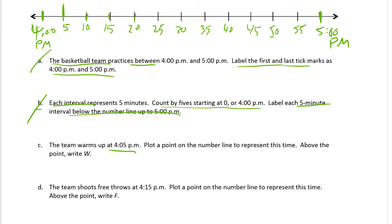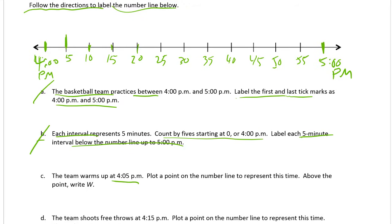Plot a point on the number line to represent this time. And above the time write W. Okay so I'm going to plot a point. Plot a point just means make a dot at that place on the number line. So there's the dot. I'm going to label it with a W for warming up. That's it. Done with C.